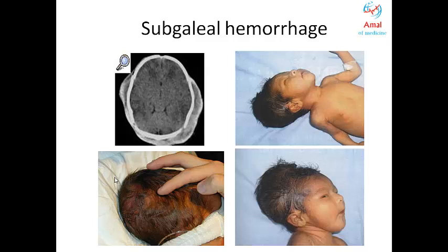Features of subgaleal hematoma include diffuse swelling of the head, with sutures usually not palpable because the amount of fluid can be larger than estimated. Within 48 hours, blood can track between the fibers of the occipital and frontal muscles, causing bruising behind the ears, along the posterior hairline, and around the eyes — as visible in the image showing blood accumulated around the ears.